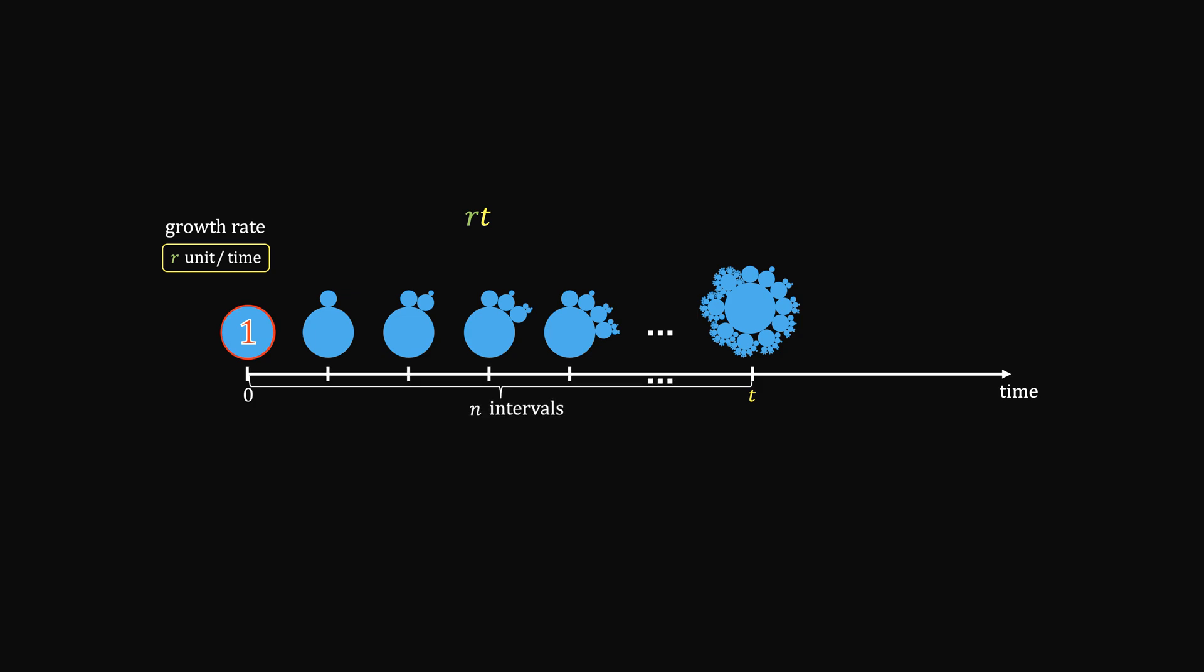Now we can break into many intervals, so during each interval one unit produces rt over n. This way, going through n intervals, we end up with this compound term.